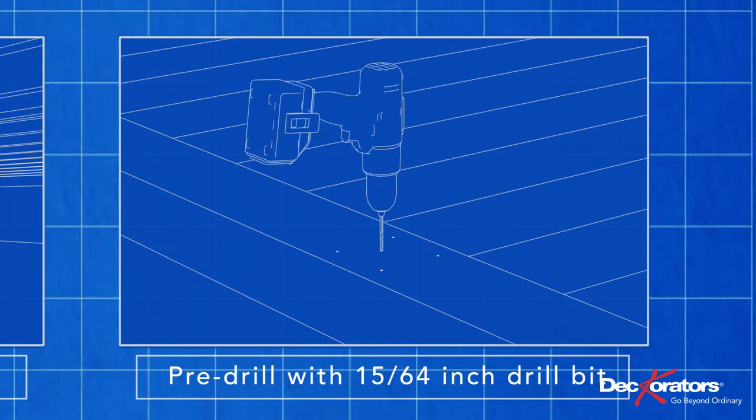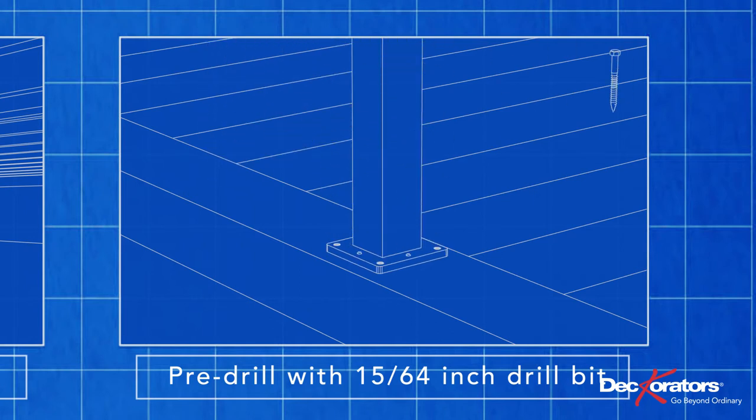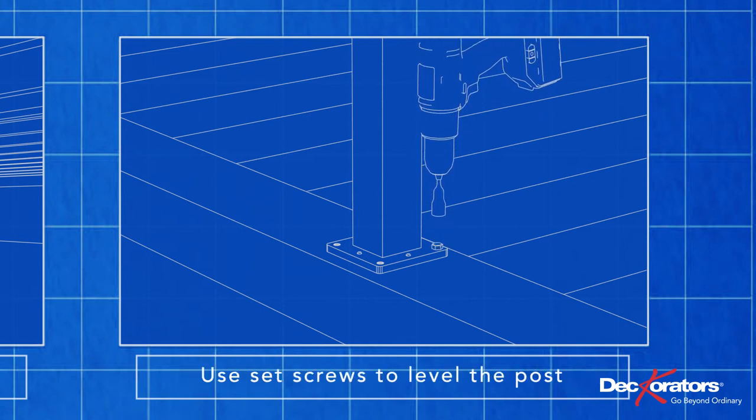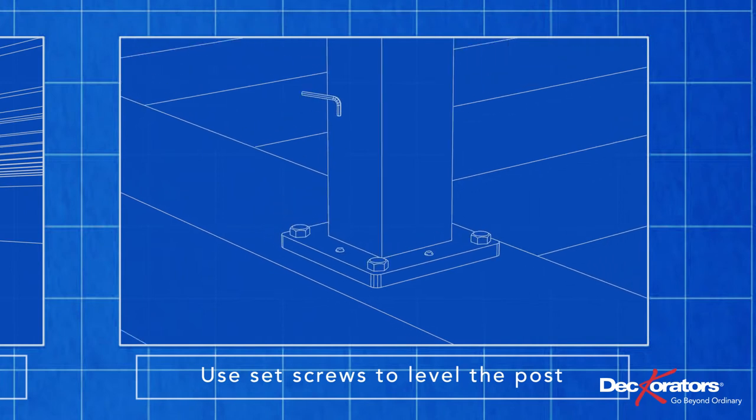Pre-drill your mounting holes with a 15-64 inch drill bit. Then fasten the posts to the deck. Use the self-leveling base plate to plumb the post. Then install the post trim by sliding it over the post.